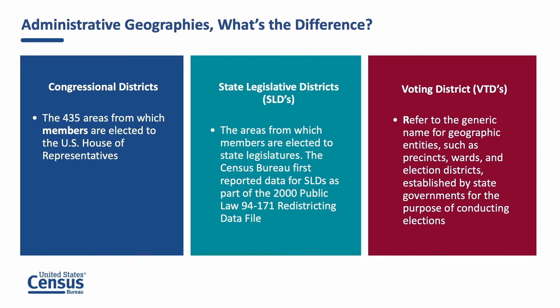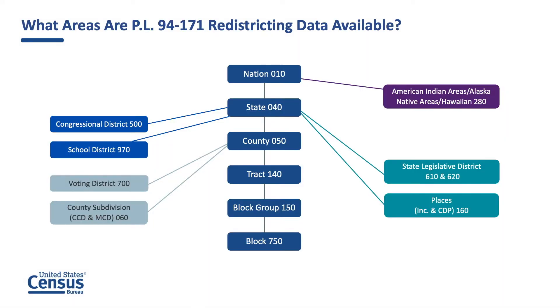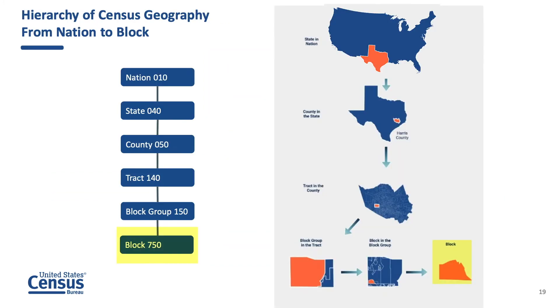Voting districts refer to the generic name for geographic entities such as precincts, wards, districts, or election districts established by state governments for the purpose of conducting elections. Redistricting data are available for the common geographies shown on this hierarchy chart. The geographies in the center line of this graphic work like nesting dolls. The smallest level of geography is the block; blocks are aggregated to form a block group, block groups form a tract, and so on.